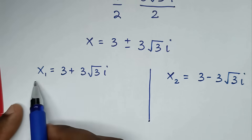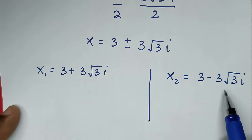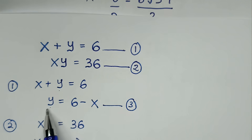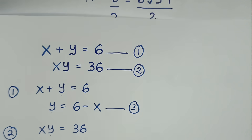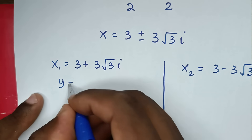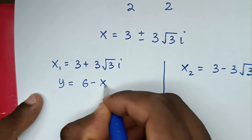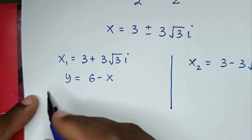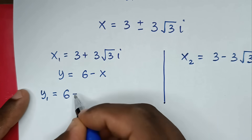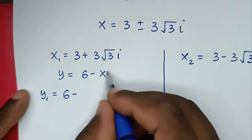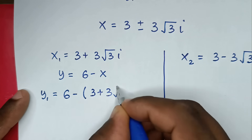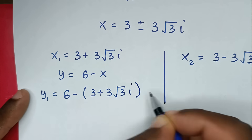Then after we get the values of x, we call from equation 3, which is y is equal to 6 minus x. For y₁ we substitute x₁, giving 6 minus bracket 3 plus 3 square root of 3i bracket.